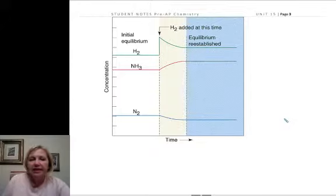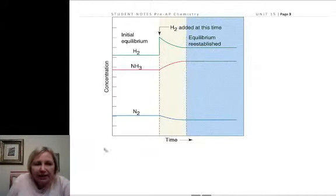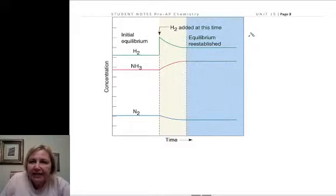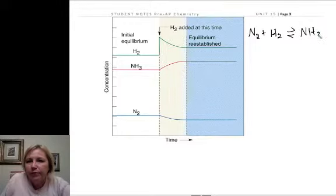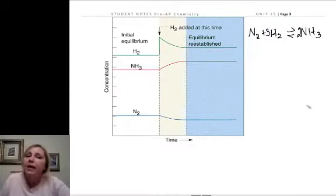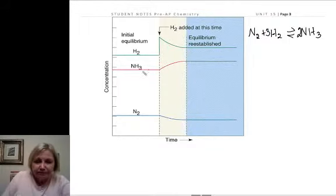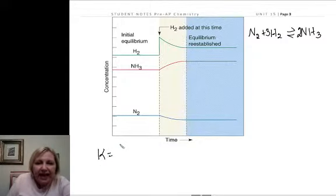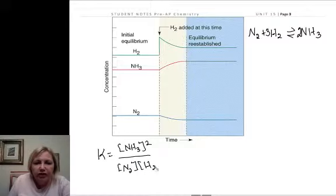We have a reaction in this case with nitrogen plus hydrogen yielding ammonia. It's called the Haber process, and frankly I get a little bored with it because it's the most common example. But this is a good picture to demonstrate. So this shows our initial equilibrium, and K is equal to the ammonia squared over our nitrogen times our hydrogen cubed.